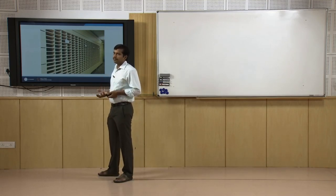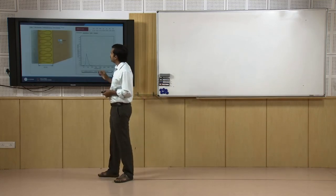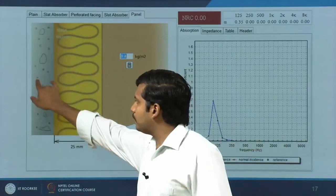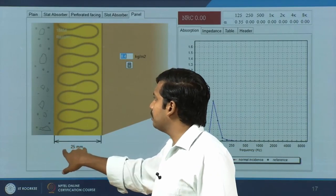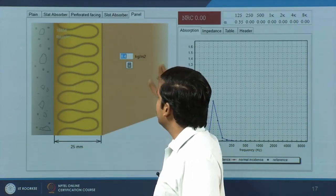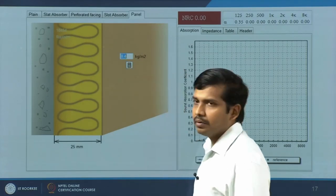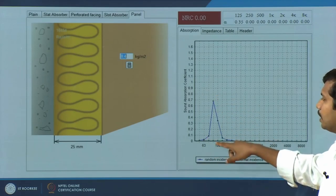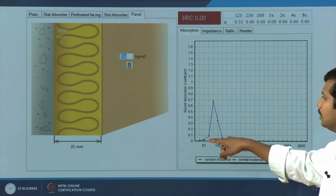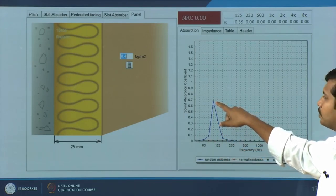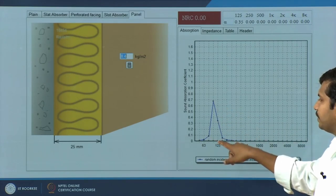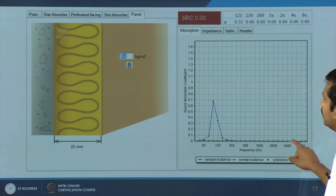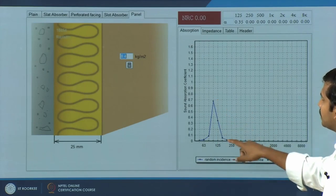A few examples — starting with panel absorbers. Take a solid wall with a 25 mm thick glass wool backing and a plywood panel of 8.4 kg/m². Typically, you get a sharp absorption around 100 to 125 Hz — an absorption coefficient of around 0.7 close to 125 Hz — but after that the alpha values are almost 0. You get very good absorption in that low frequency region, but after that it drops down. If you look at the NRC, it will show 0 because it only accounts for frequencies above this frame.